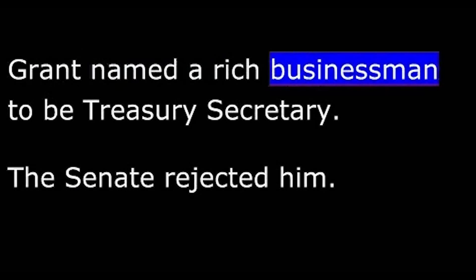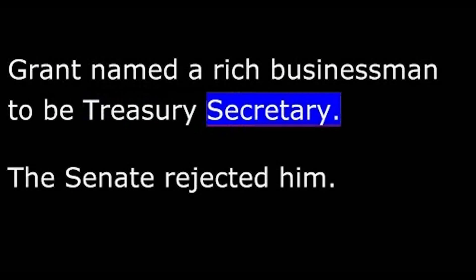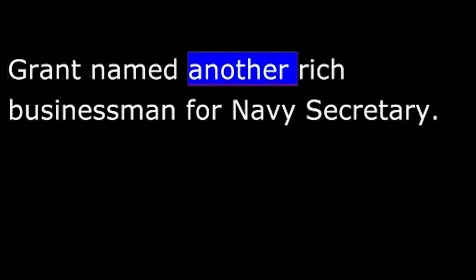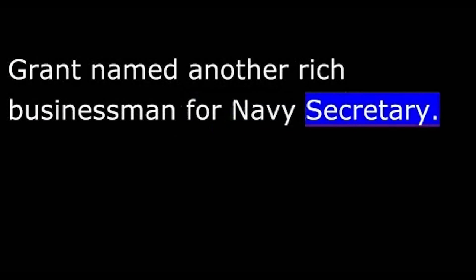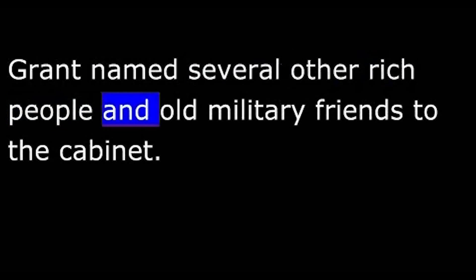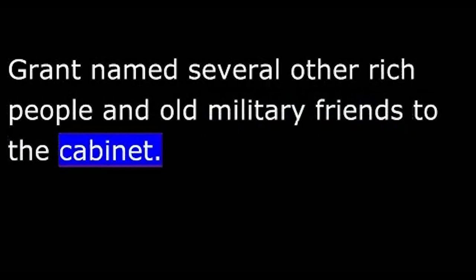This weakness for money and power became clear when he announced his choices for his cabinet. Grant named a rich businessman to be Treasury Secretary. The Senate rejected him. Grant named another rich businessman for Navy Secretary. This nomination was approved, even though the man had never been on a ship. Grant named several other rich people and old military friends to the cabinet. Many lacked political experience. One critic said, "Never was an administration begun with more hope and less ability."